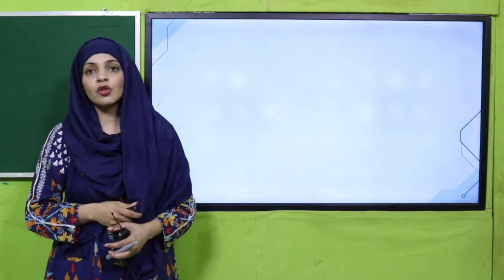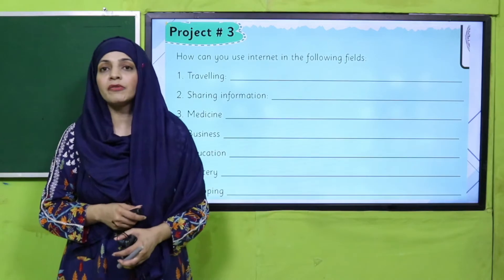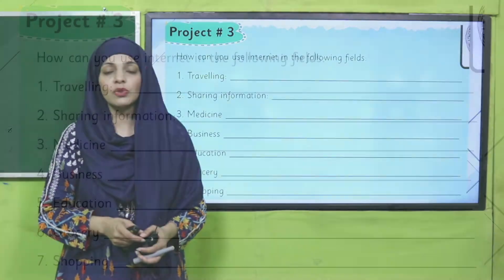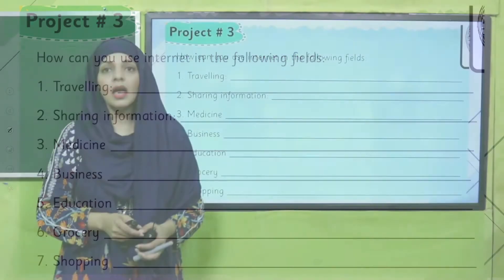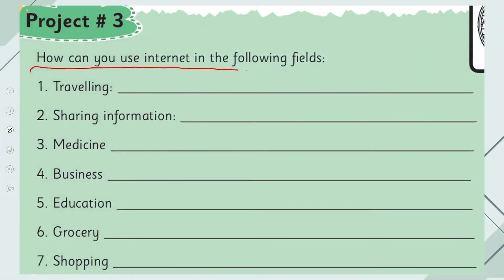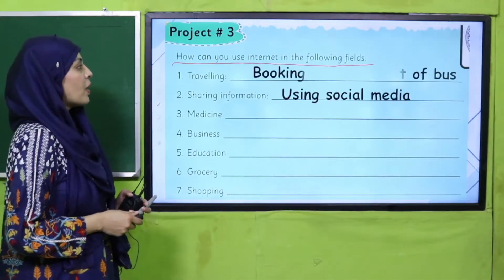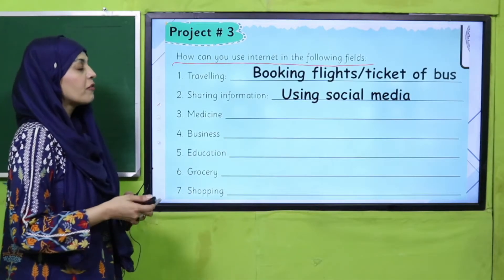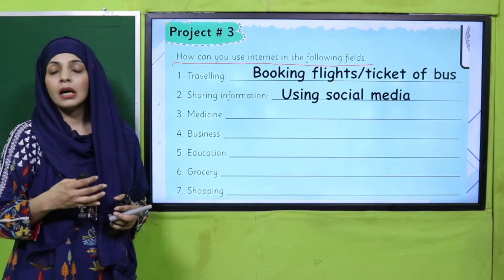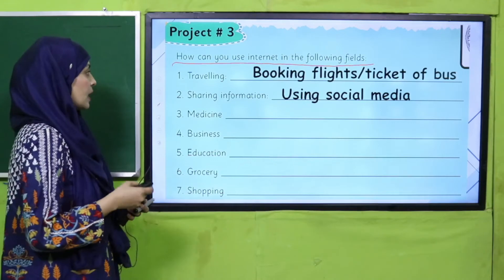So now it is time for the project. My dear students, for the project you will open project number 3 in unit number 15 of your GK books. I hope everybody has done it. So, how can you use the internet in the following fields? In traveling — for booking flight tickets, bus tickets, and navigation — the internet is used in all these ways.